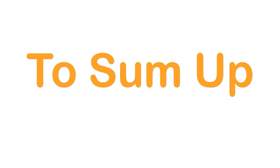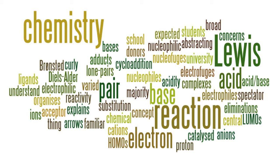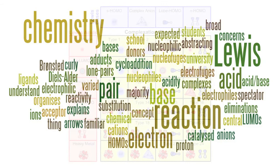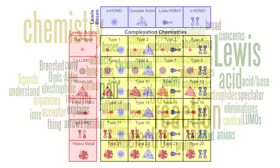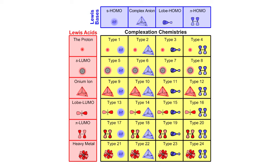To sum up: nucleophiles, Lewis bases, electrophilic substitution, eliminations, base-catalyzed abstractions, curly arrows, Bronsted acidity, electrofuges. A vast amount of university chemistry can be mapped to and explained in terms of the Lewis acid-base interaction matrix.